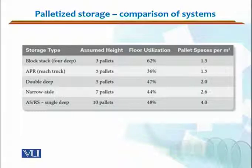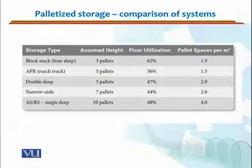For narrow aisles, the assumed height would be 7 pallets. That means in narrower aisles we can stack up to 7 pallets, whereas with reach trucks we could go for 5 pallets. But the floor utilization would still be 44%, because we need more space for material handling and maneuvering. The pallet space is much higher at 2.6 per square meter.